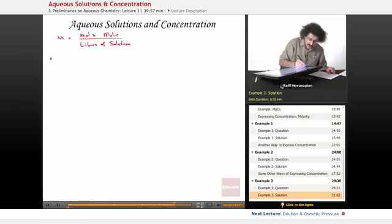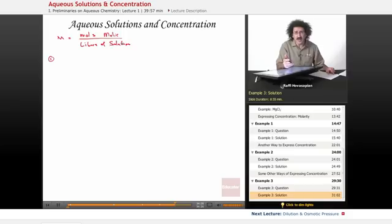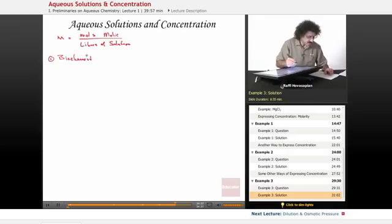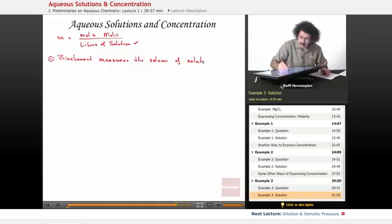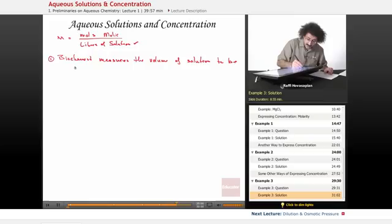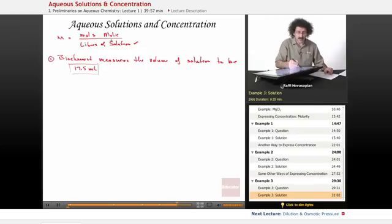The first thing I need is the moles of malic and liters of solution. The biochemist measures the volume of the solution. In other words, he just takes it and pours it into a graduated cylinder to see what the volume is in order to get that number. It measures the volume of solution to be 17.5 mils. So he has the volume, the denominator. Half our problem is done.